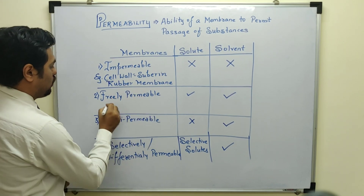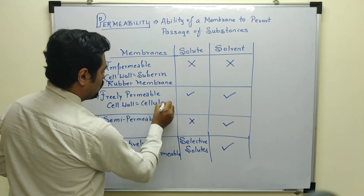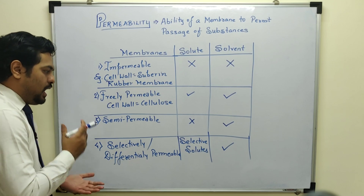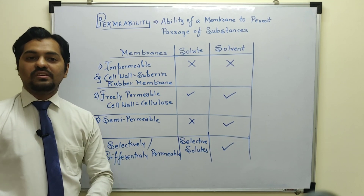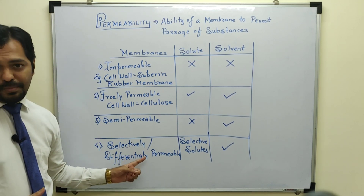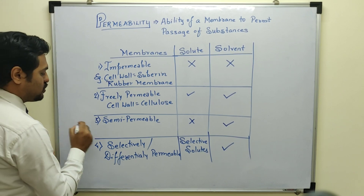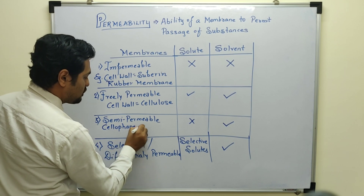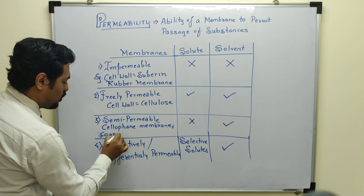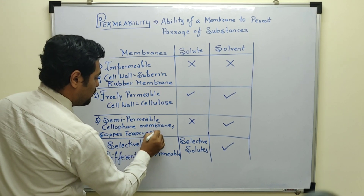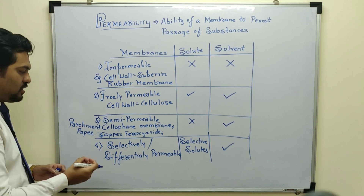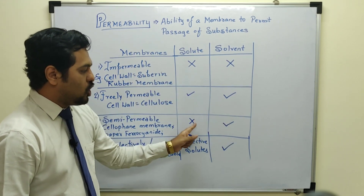The freely permeable example is again the plant's cell wall, mainly composed of cellulose. Cellulosic cell walls allow both solute and solvent molecules. For semi-permeable membranes, all examples are artificial membranes — because in living systems, membranes are all selectively permeable. Examples of semi-permeable artificial membranes include: cellophane membrane, copper ferrocyanide, and parchment paper. These artificially created membranes allow only solvent molecules, not solute molecules.